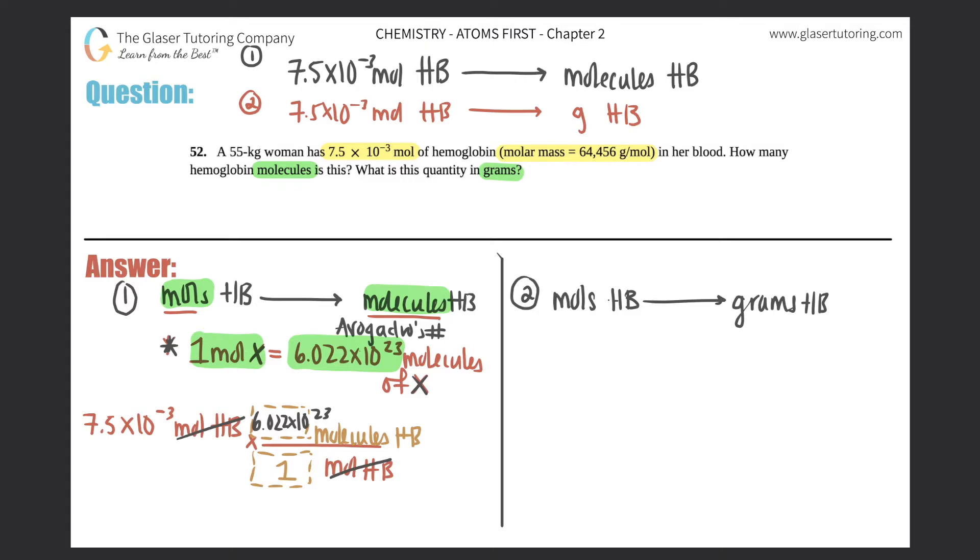7.5 times 10 to the negative 3rd times 6.022 times 10 to the 23rd is a huge number, but we got to make sure that we keep it two sig figs. If you need help with your sig figs, go back to chapter one. We have tons of problems there, but this is just 4.5 times 10 to the 21st molecules of hemoglobin. So this is the first part to the answer.